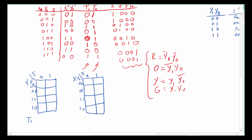This second K-map is going to be T0. We read T1 from here and T0 from here. For T1 we get: 0, 0, 1, 0, 0, 0, 1, 1, 0, 1. For T0 we get: 1, 0, 1, 1, 1, 0.